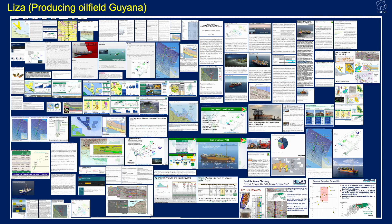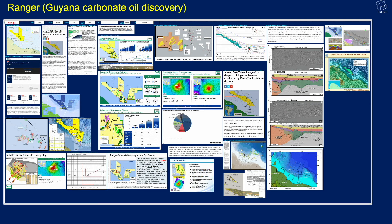As well as maps, we have information on fields like the Lesar field — cross sections, seismic lines, write-ups on the project, infrastructure information, and early years of production data — all contained in one quick, easy-to-find place. The Ranger discovery is a Guyana carbonate oil discovery in the Stabroek block, made by ExxonMobil — here's all the publicly available information about that discovery.